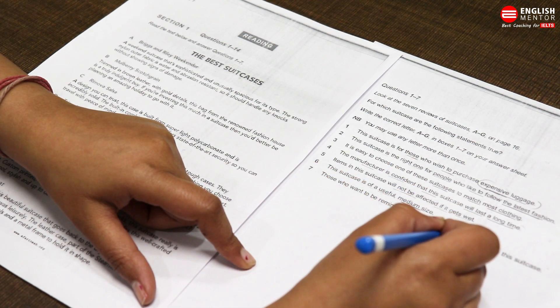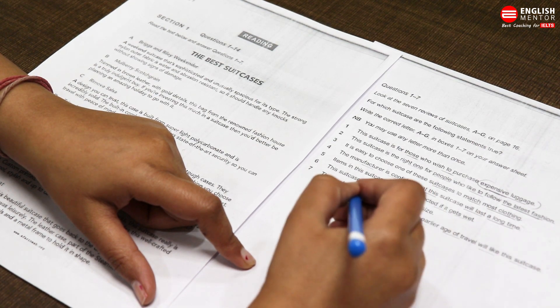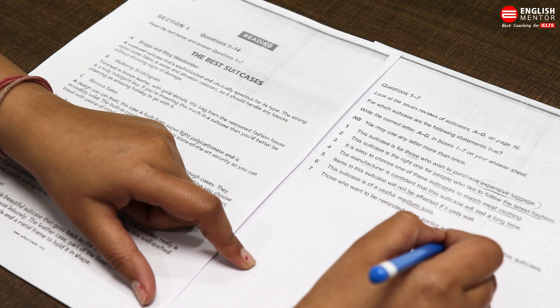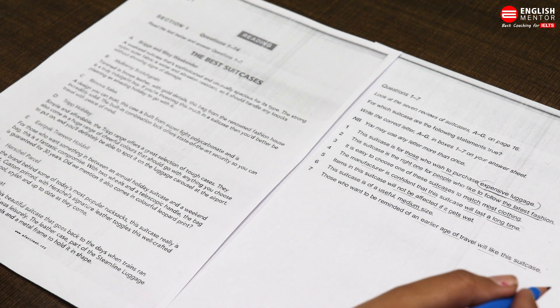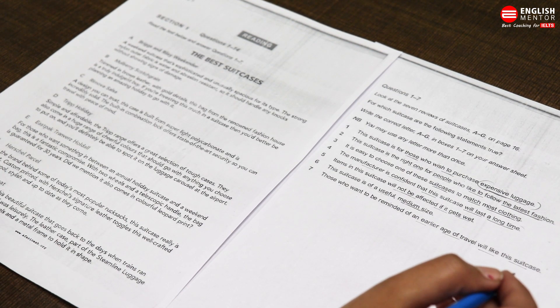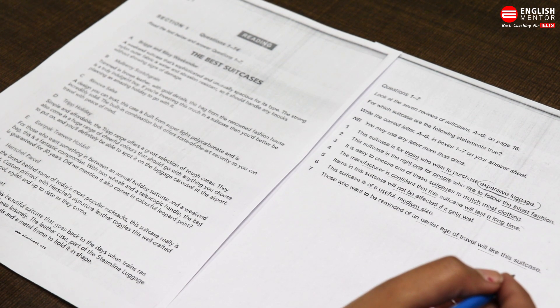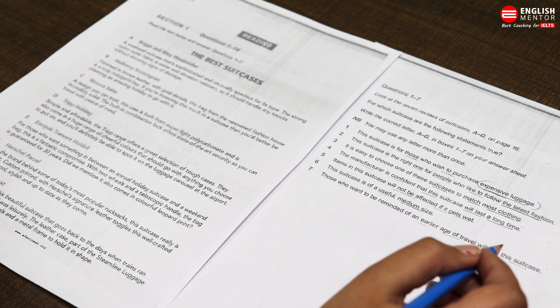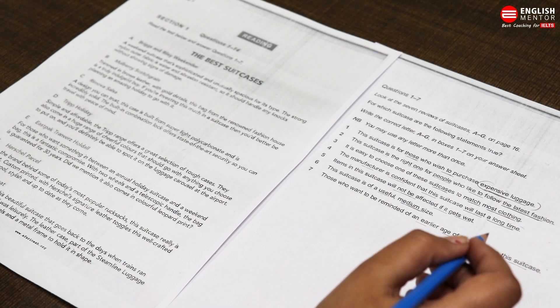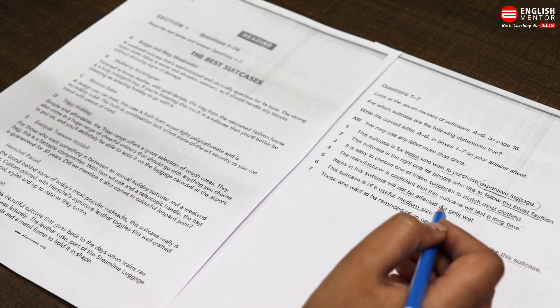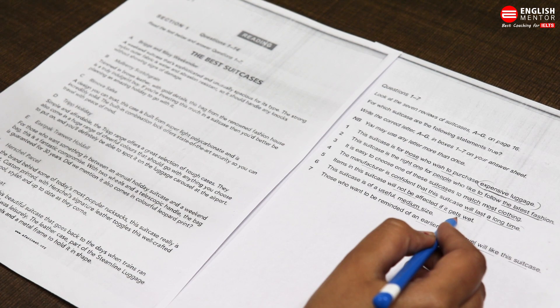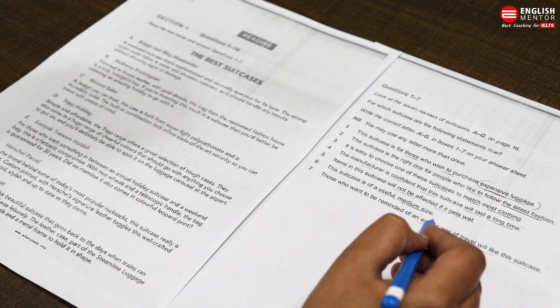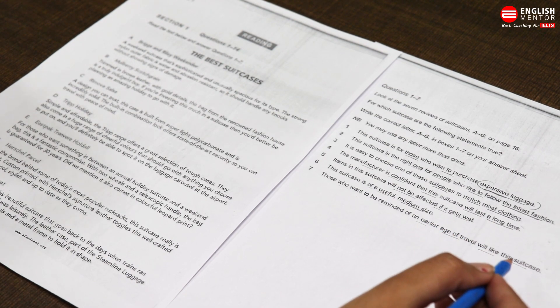Question seven: Those who want to be reminded of an earlier age of travel will like this suitcase. Ki yeh jo humein batata hai, remind karata hai, yaad karata hai ki early age mein kaise travel karti thi, kind of suitcase hai. So many students have raised this question that ma'am, we cannot remember keywords. Dekho students, if you are applying the RUP method for the first time, then yes, it will be difficult for you to remember the keywords. But when you will exercise the same method for two or four readings, then you will become habitual of this method, and this method will really be beneficial for you in solving the reading with accuracy.